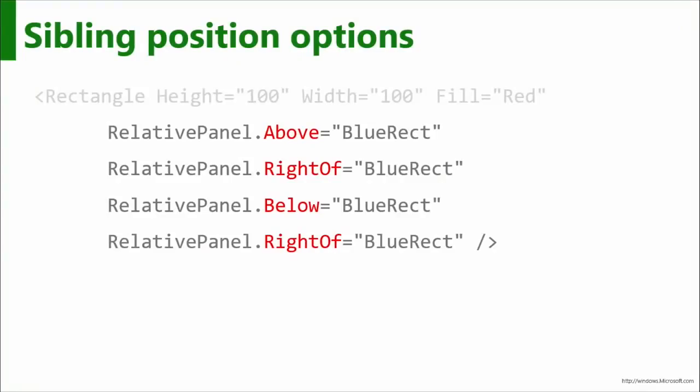Here are the things you can do as far as sibling positions. There are two things: you can both position and align. These are the four position options you'd expect: above, right of, below, and left of. And so the red rectangle can go all four directions around the blue rectangle.